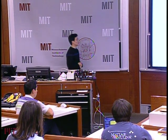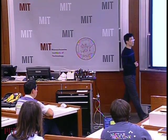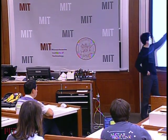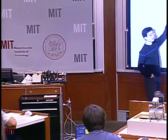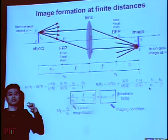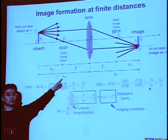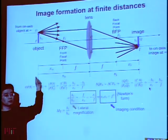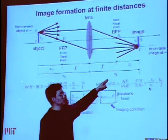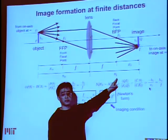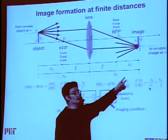Sometimes it's more convenient to define the distance from the object to the lens — not the focal plane. So we define SO as the object distance from object to the lens, and SI as the image distance from lens to image.